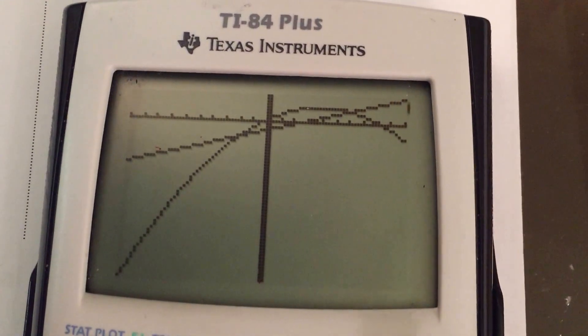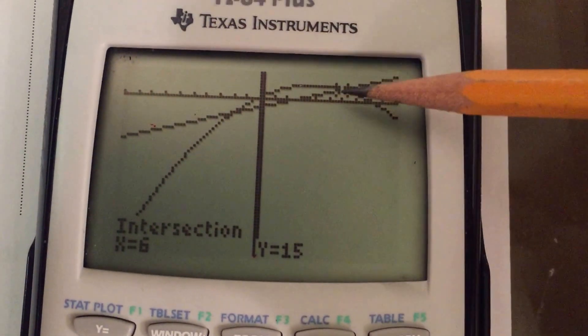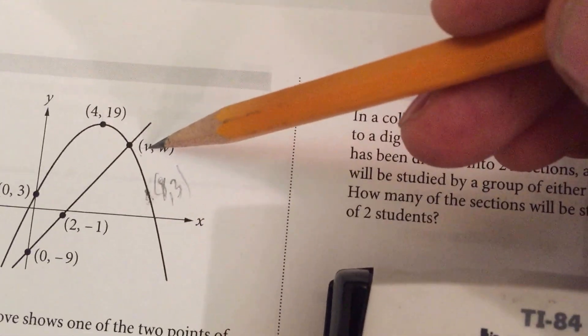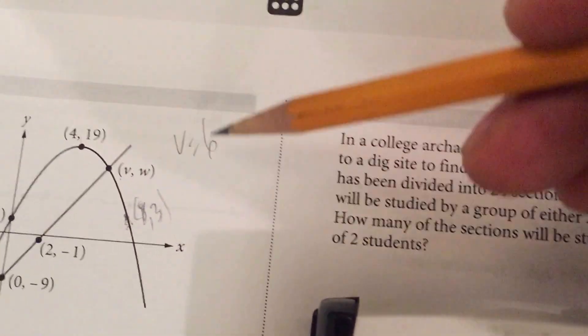So it's going to say guess. Press enter one more time and it says that the intersection for this point is 6, 15. So our answer would be, because we're looking for V or the x coordinate, would be 6. So V is equal to 6. We're done. Thank you.